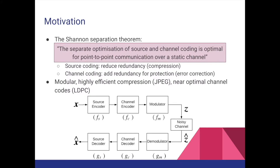To motivate this problem, we first describe how a conventional communication system is built. A conventional communication system is built primarily on the Shannon Separation Theorem, which states that the separate optimization of source and channel coding is optimal for point-to-point communication over a static channel. The source encoder will attempt to first reduce the redundancy in the source information, before the channel encoder strategically adds the redundancy back in to protect the message over a noisy channel.